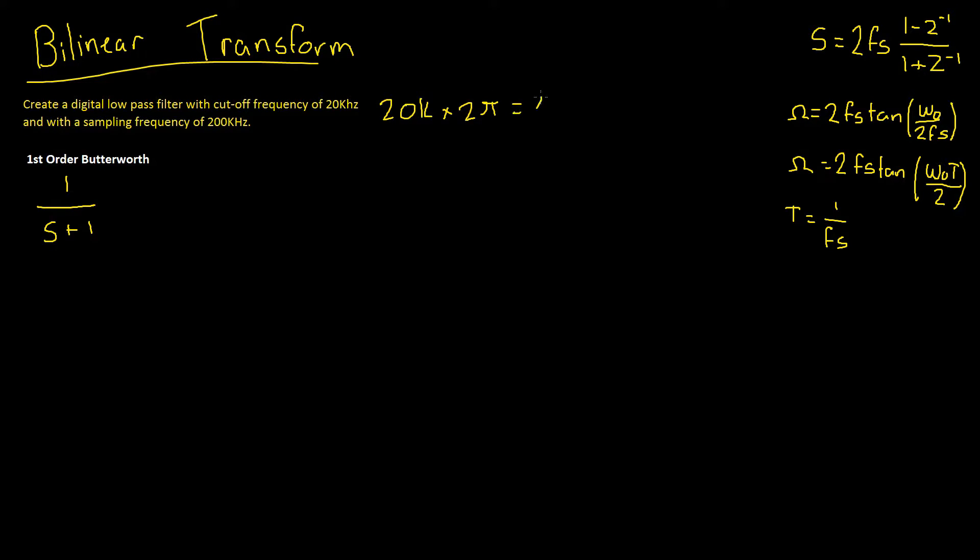Which will give us 40kHz pi. And we also have our sampling frequency, f of S, of 200kHz. And remember, this is our omega 0.